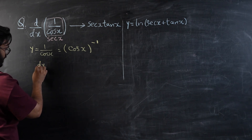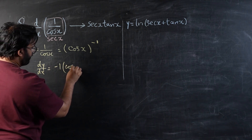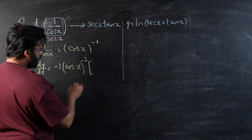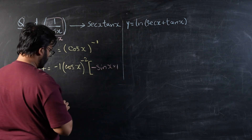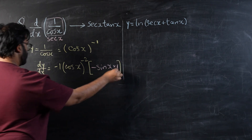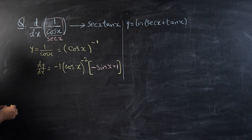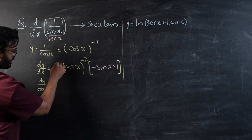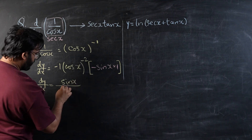I'm going to prefer to use the power rule. So dy/dx will be equal to negative one, subtracting one from the power gives minus two, and the differentiation of cos x is negative sin x. This gives the full differentiation. Now let's simplify: dy/dx equals — the negatives cancel — so it becomes sin x over cos² x.